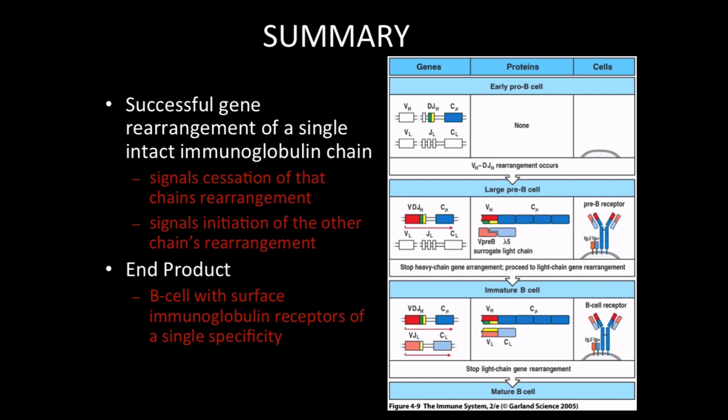Successful gene rearrangement of a single intact immunoglobulin chain sends out signals saying we've succeeded and don't need to waste more ATP doing rearrangement and creating damaged cells. This signals initiation of the other chain's rearrangement—so the ending of one process is also the activation signal for the other. At the end, what we get is a B-cell with surface immunoglobulin receptors of single specificity.